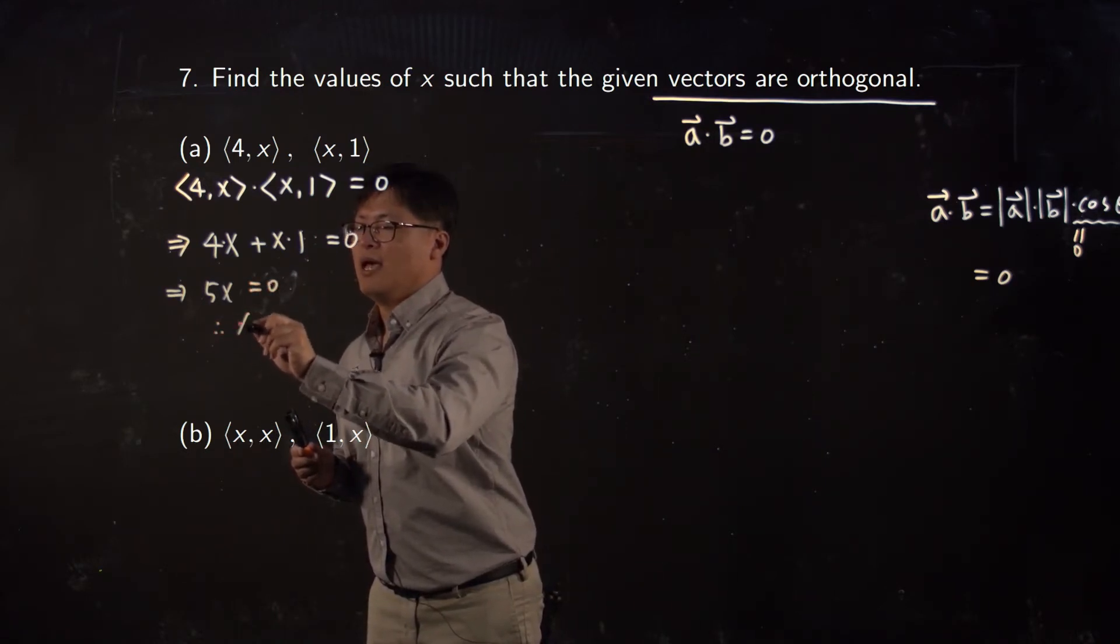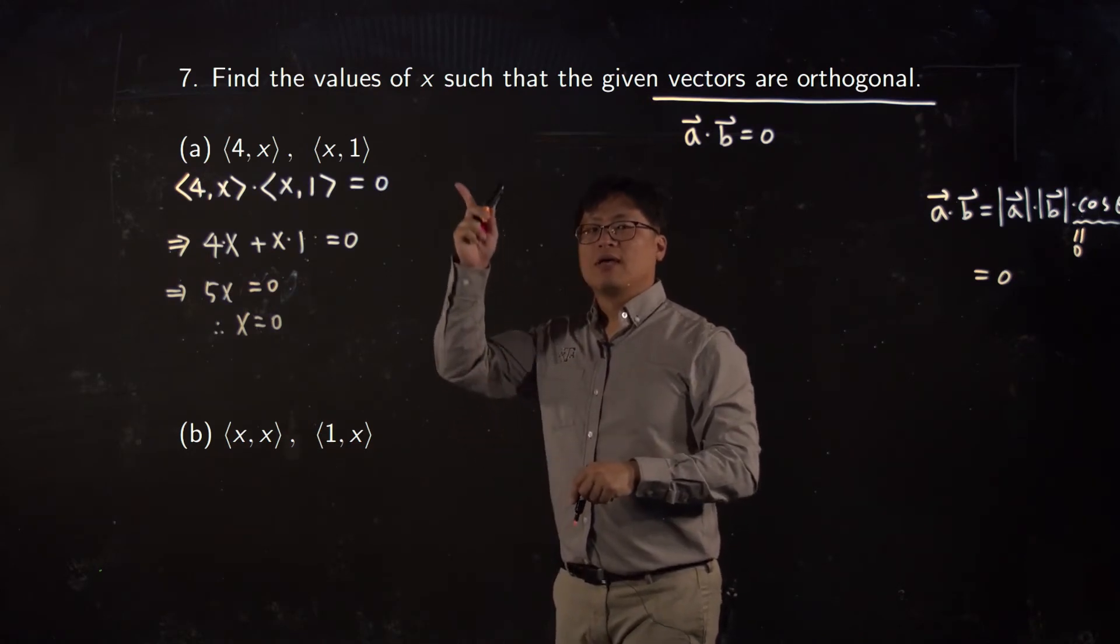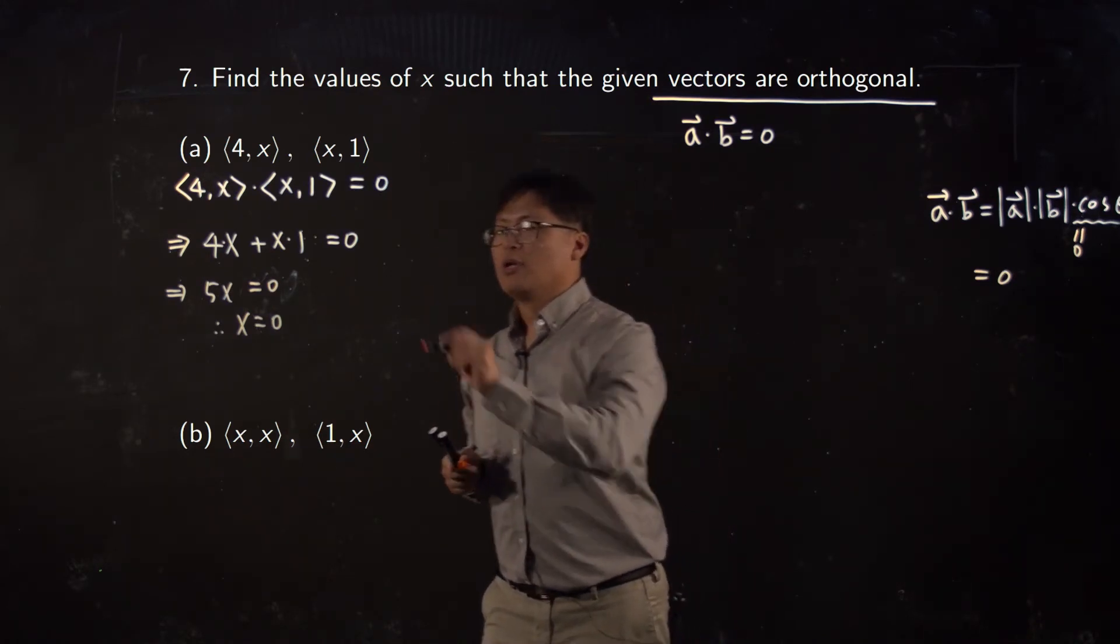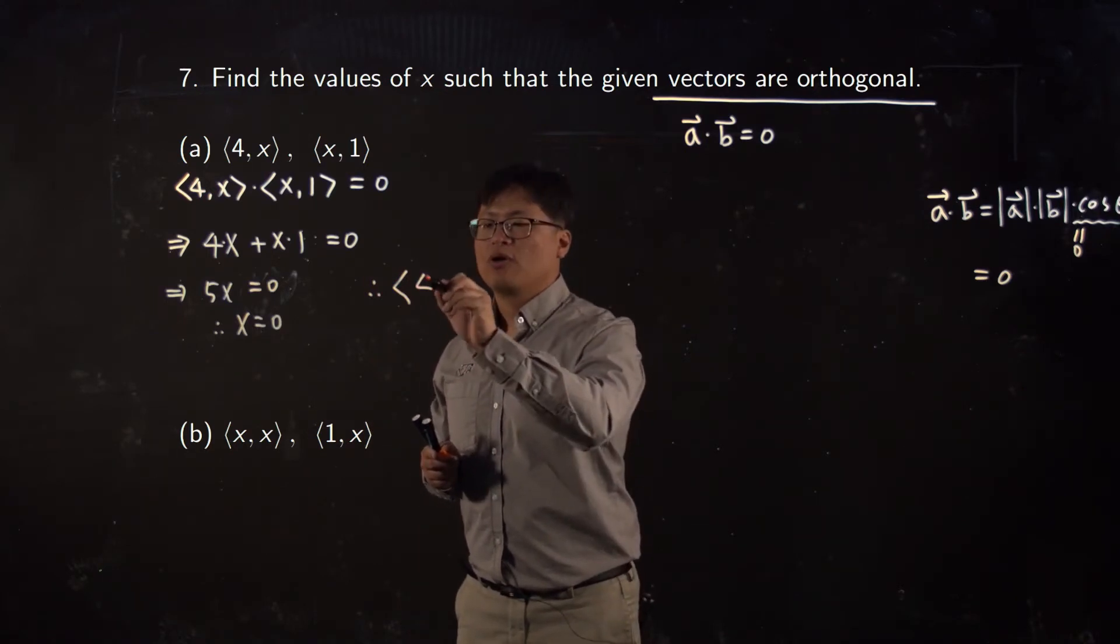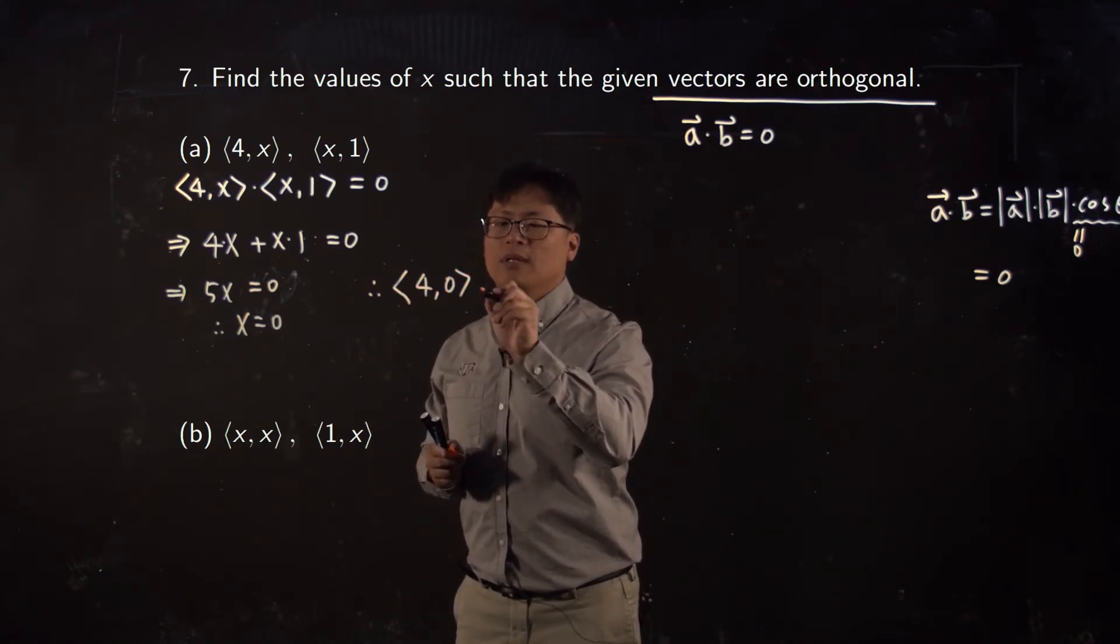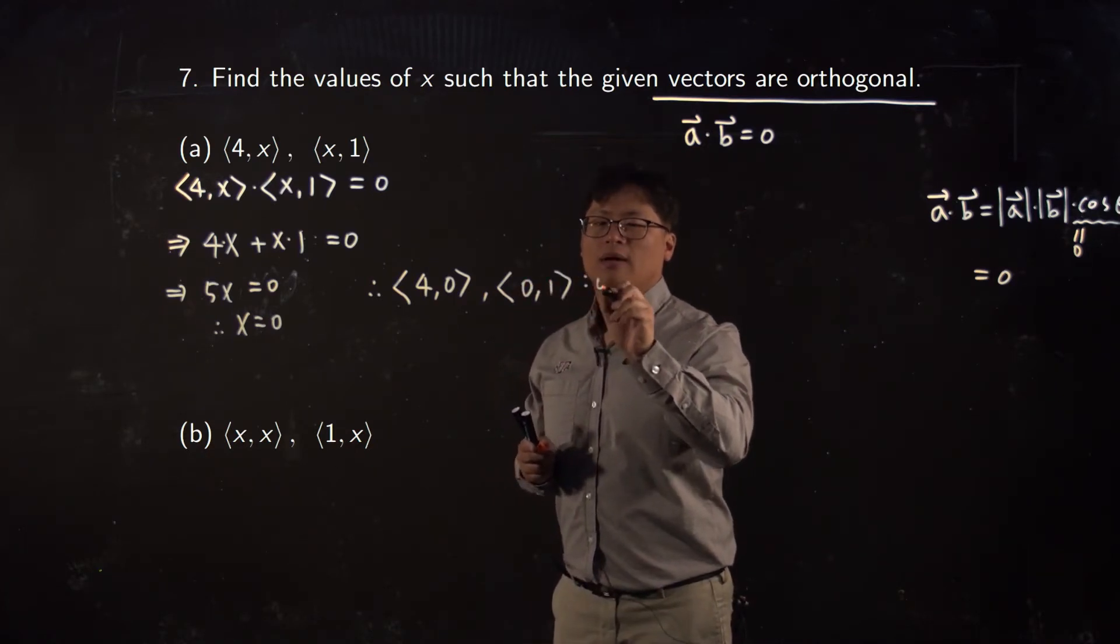Then the answer is x equals zero. So which means when x equals zero, your two vectors are orthogonal. So let me give the two orthogonal vectors. First one is (4, 0) and second vector is (0, 1). They are